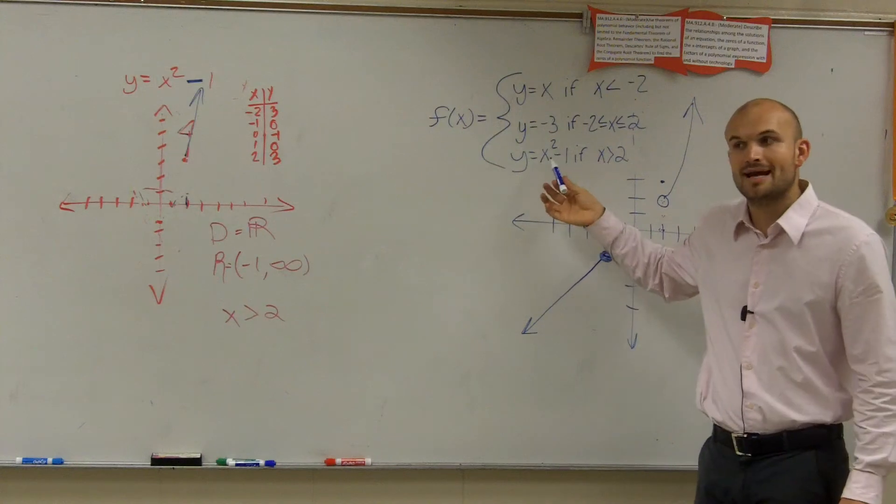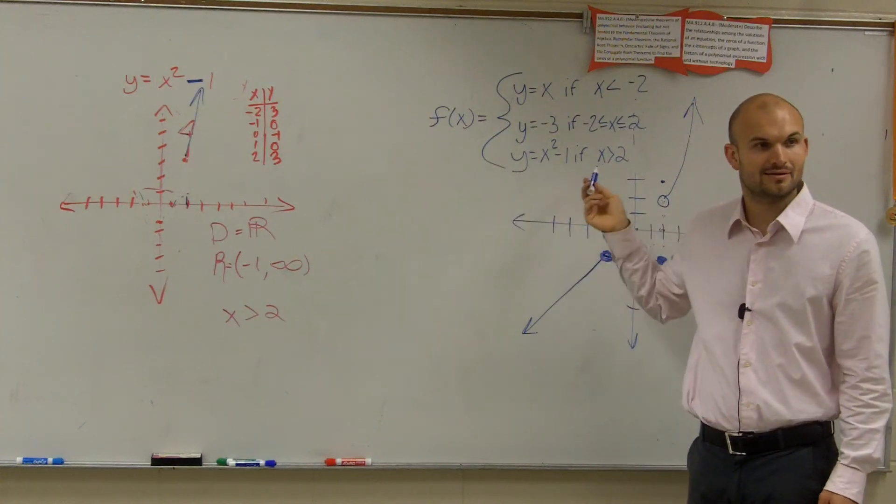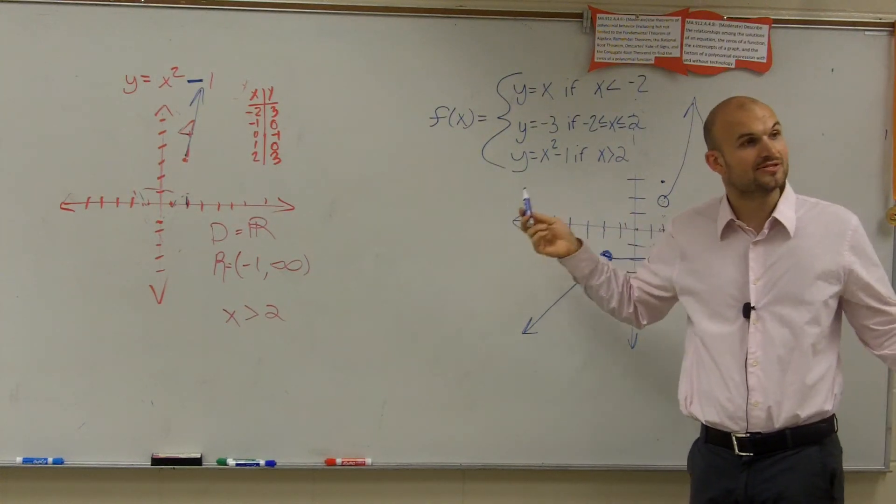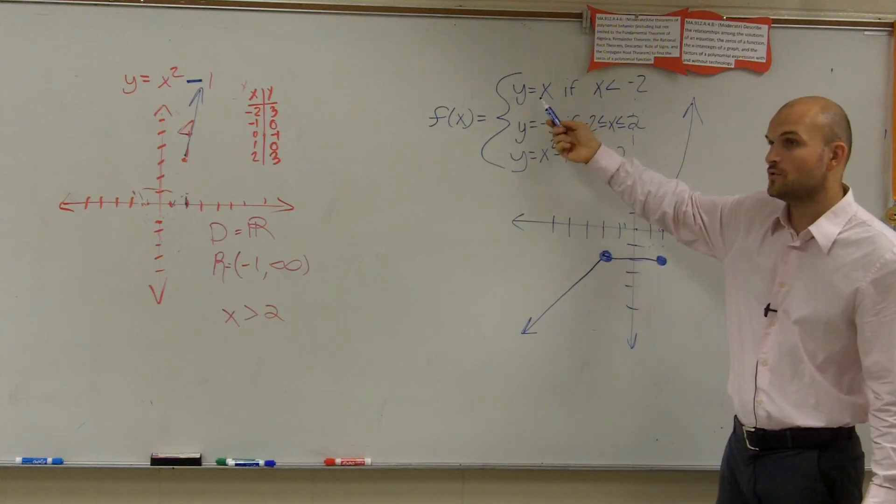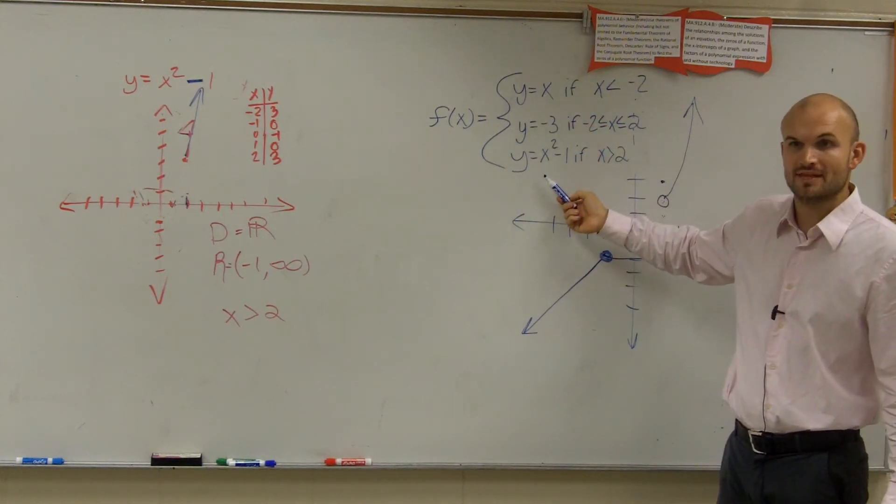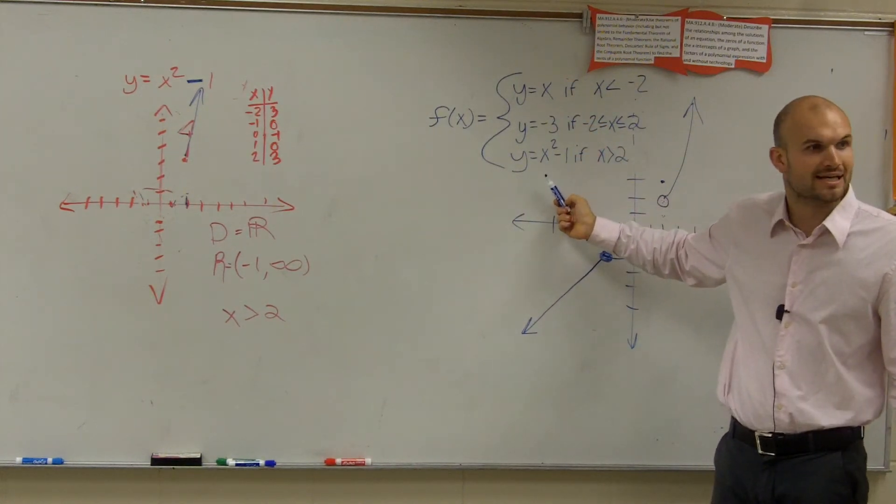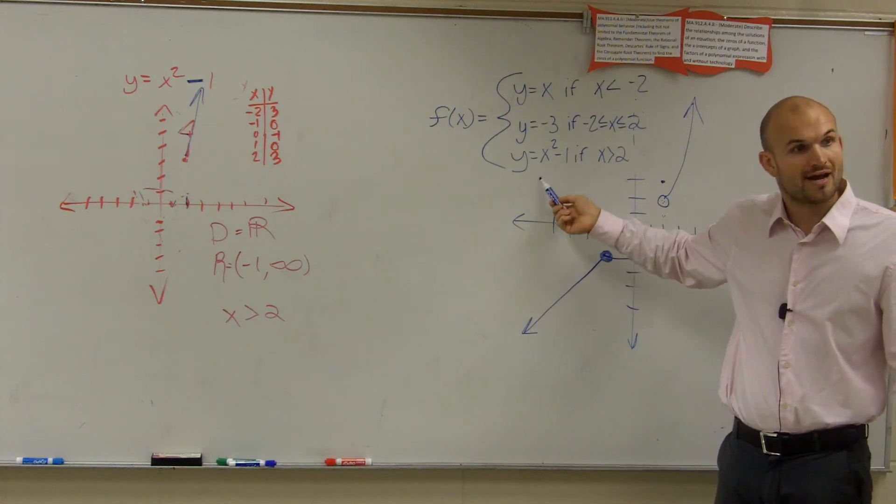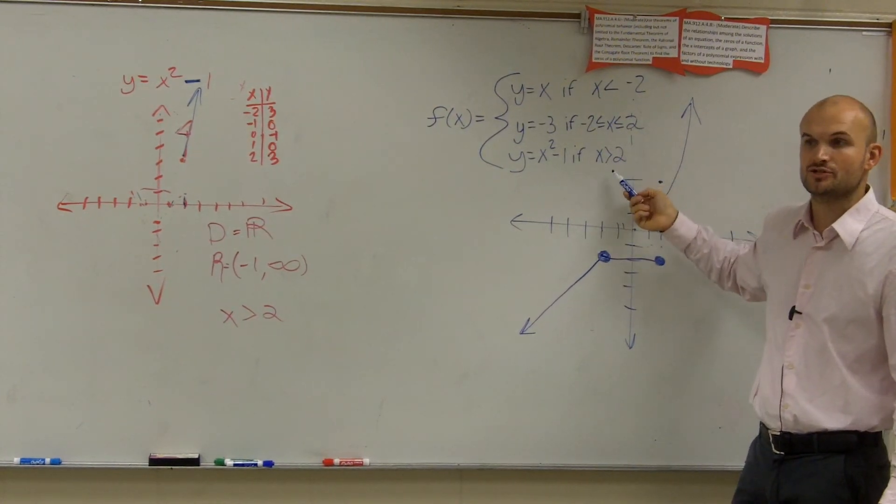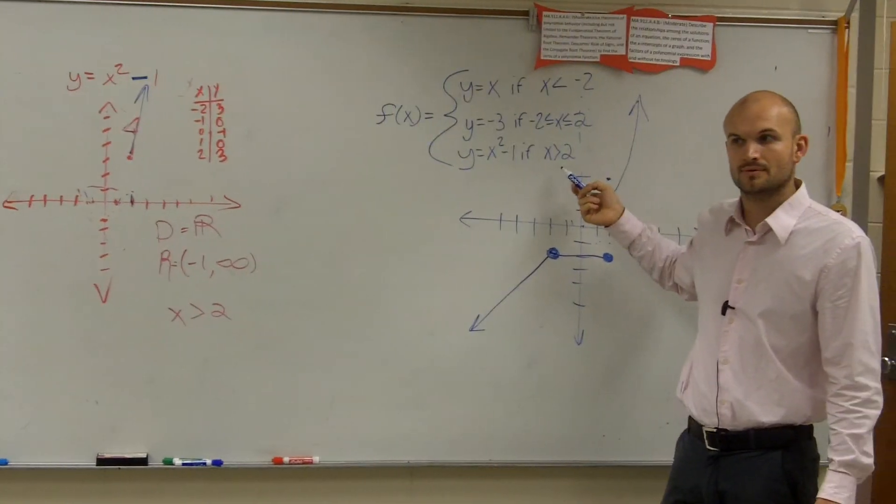So this is what I'm going to ask you guys to graph, all right? And that's exactly how you do a piecewise function. You take each one of these graphs and you graph them. But you don't graph them on an infinite domain. You graph them on the constraint of the domain that makes it true. Does that make sense, Amber? Yes.